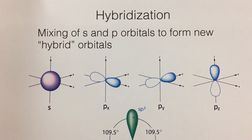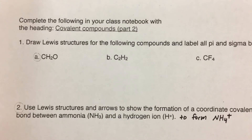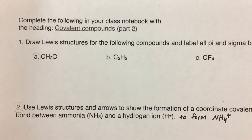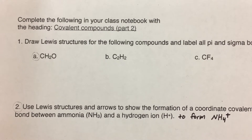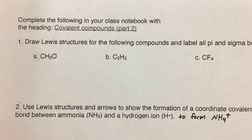All right, chemistry kids, here's another tutorial video for you. This video is for the Covalent Compounds Part 2 homework assignment, which covers the topics of sigma and pi bonds, coordinate covalent bonds, and hybridization. We're going to go through each of these topics separately, and I'm going to go through the homework and do at least the first part of each section. We'll start with question 1a, which is about sigma and pi bonds.